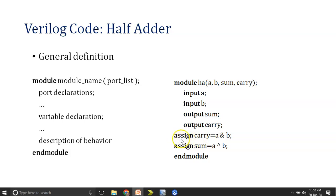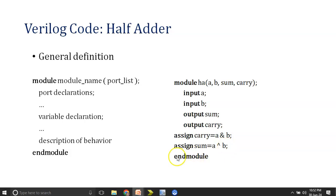So: 'assign carry = A & B' — ampersand indicates AND and semicolon indicates end of line. This is the value of carry, obtained by ANDing A and B. Sum will be obtained by A OR B, where the pipe symbol '|' indicates OR. You need to end the module with 'endmodule'.